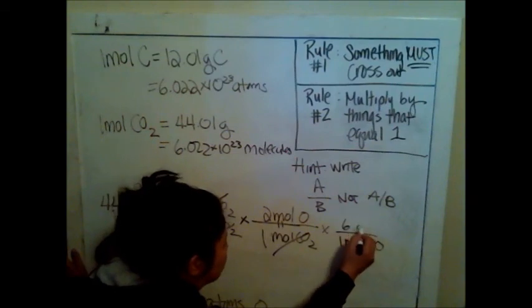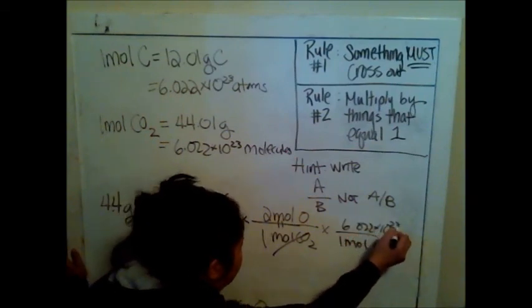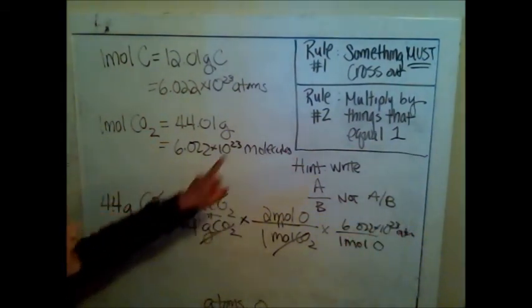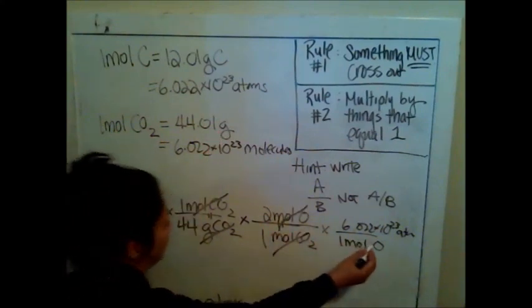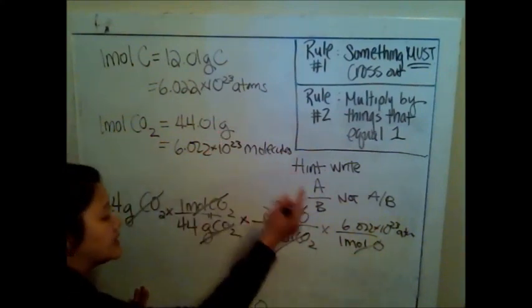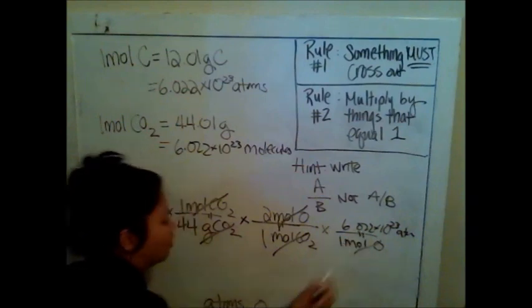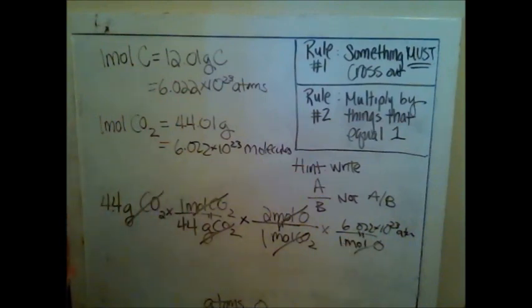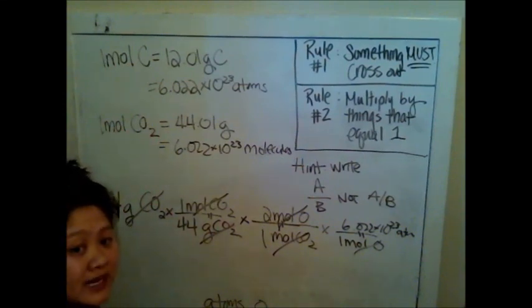My last step would be to say 1 mole of oxygen is 6.022 times 10 to the 23rd atoms of oxygen. I check my two rules. Something can cross out. Moles of oxygen on top, moles of oxygen on bottom. Is this something that equals 1? Yes, a mole of oxygen equals 6.022 times 10 to the 23rd atoms of oxygen. Then I do my math again here, and I end up with probably 3.011 times 10 to the 23rd atoms. So those are just some quick examples.